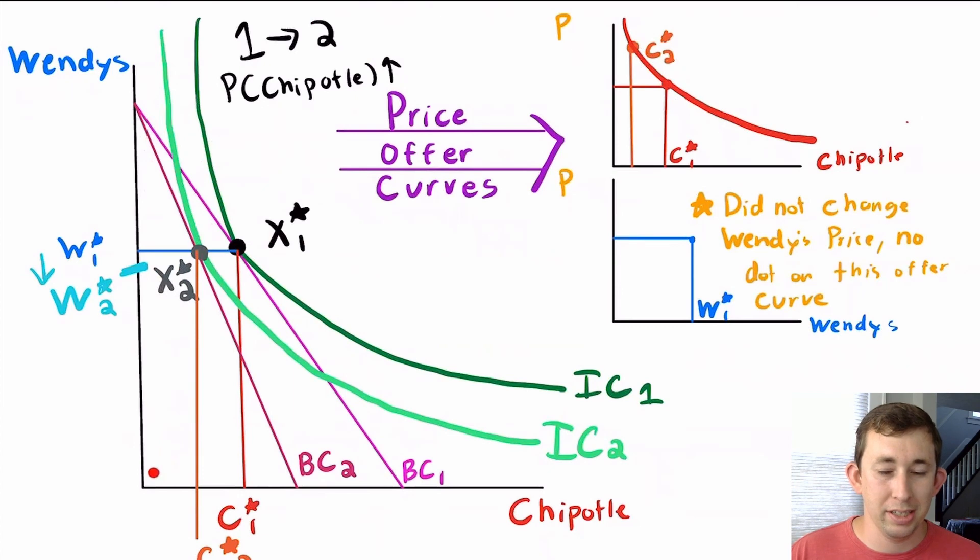And I've got budget constraints that are really steep, where Chipotle is really expensive. Each time I do a new hypothetical budget constraint, I think about the new preferred bundle where the indifference curve is tangent to that budget constraint, how much Chipotle I buy, and I plot each of those points on this price offer curve where price is on the y-axis and the amount of Chipotle is on the x-axis.